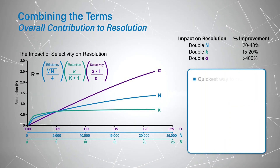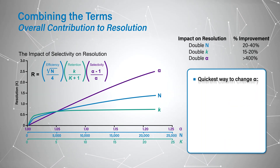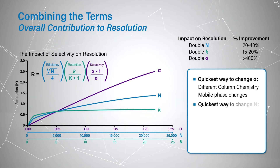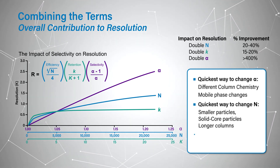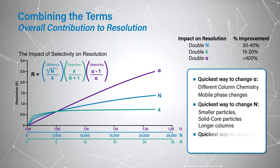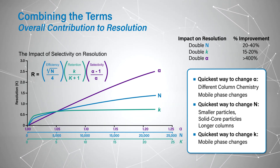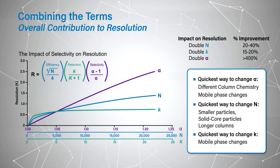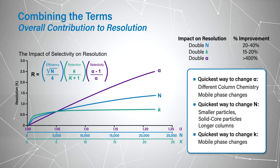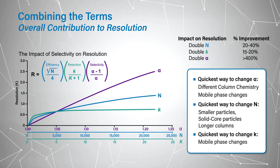Selectivity is by far the biggest thing that you can adjust when doing method development, and there are a lot of different ways you can do that. You can use a different particle or a different stationary phase, looking at different mobile phase pHs, or looking at even different solvents. Let's start by taking a look at stationary phases — we can look at some base particles and bonded phases.